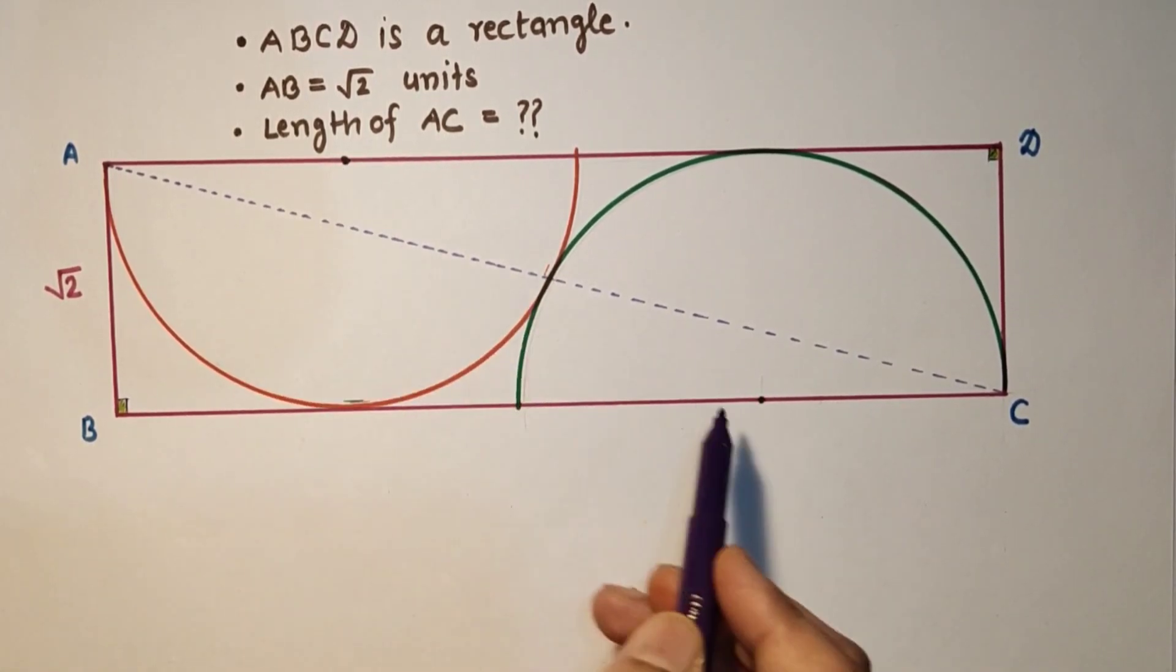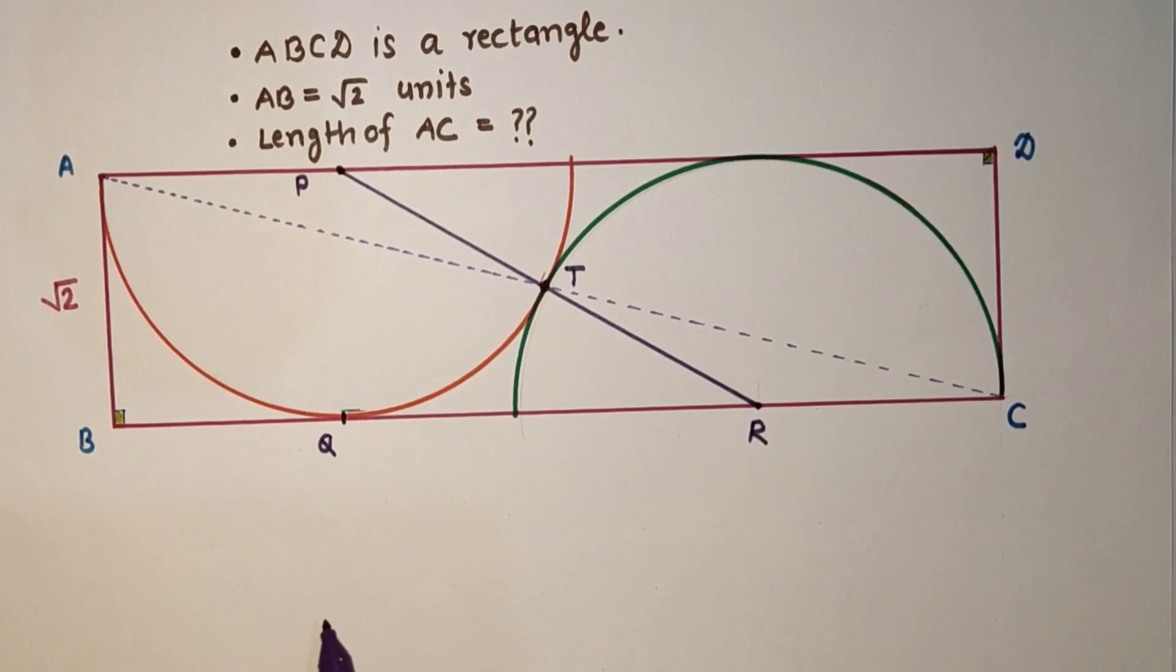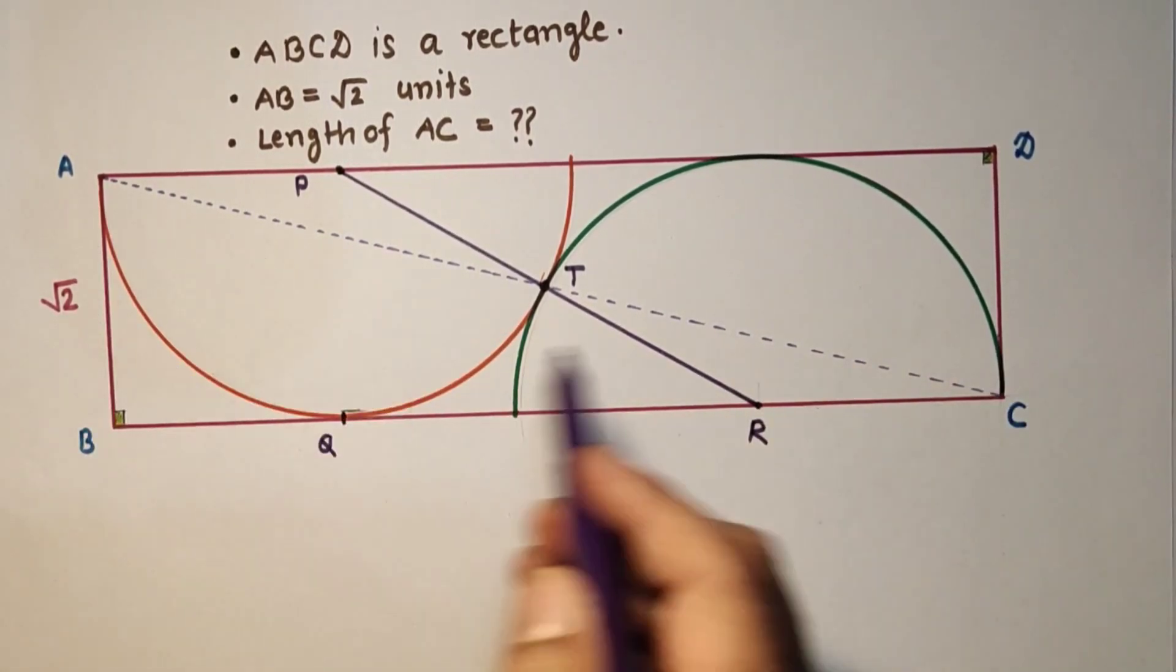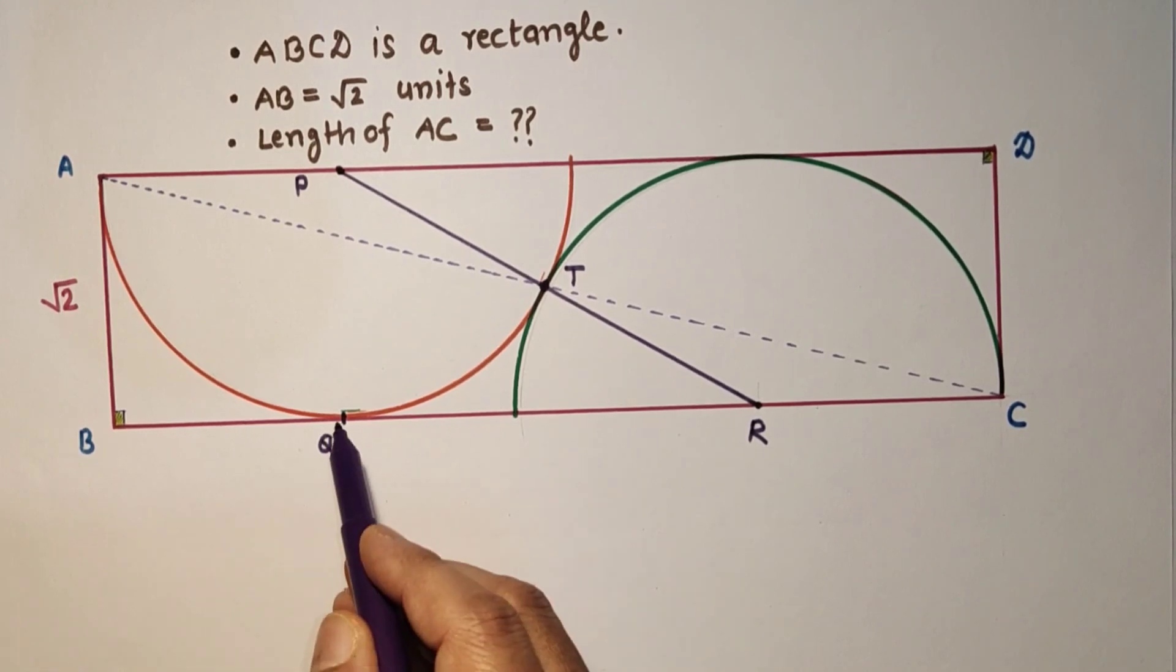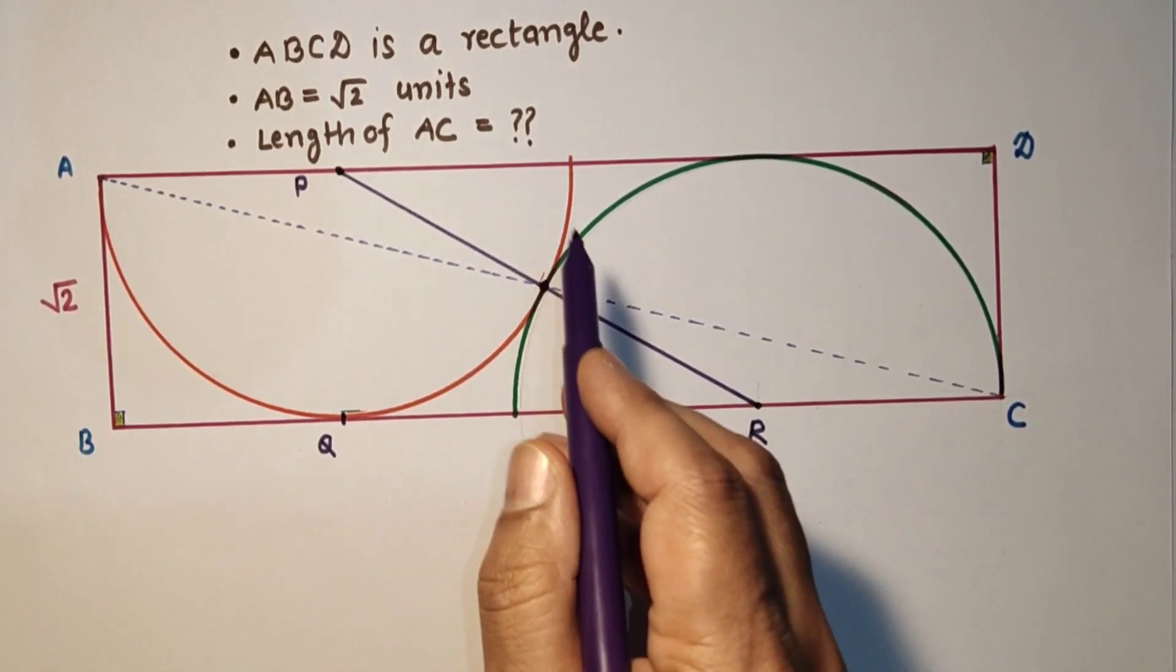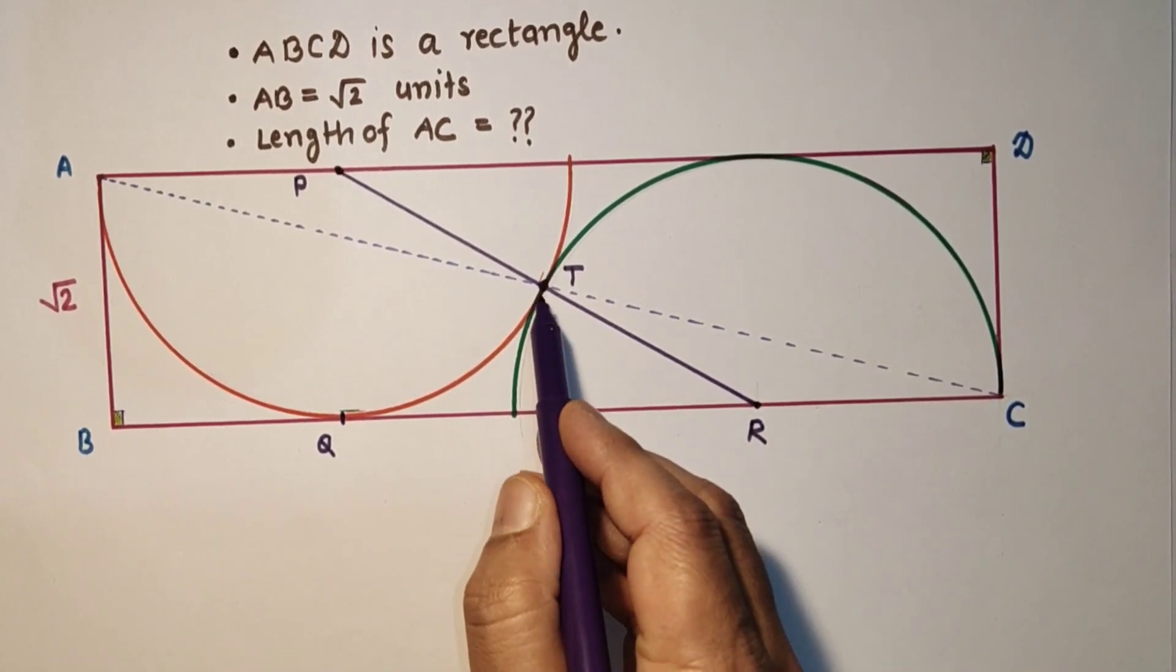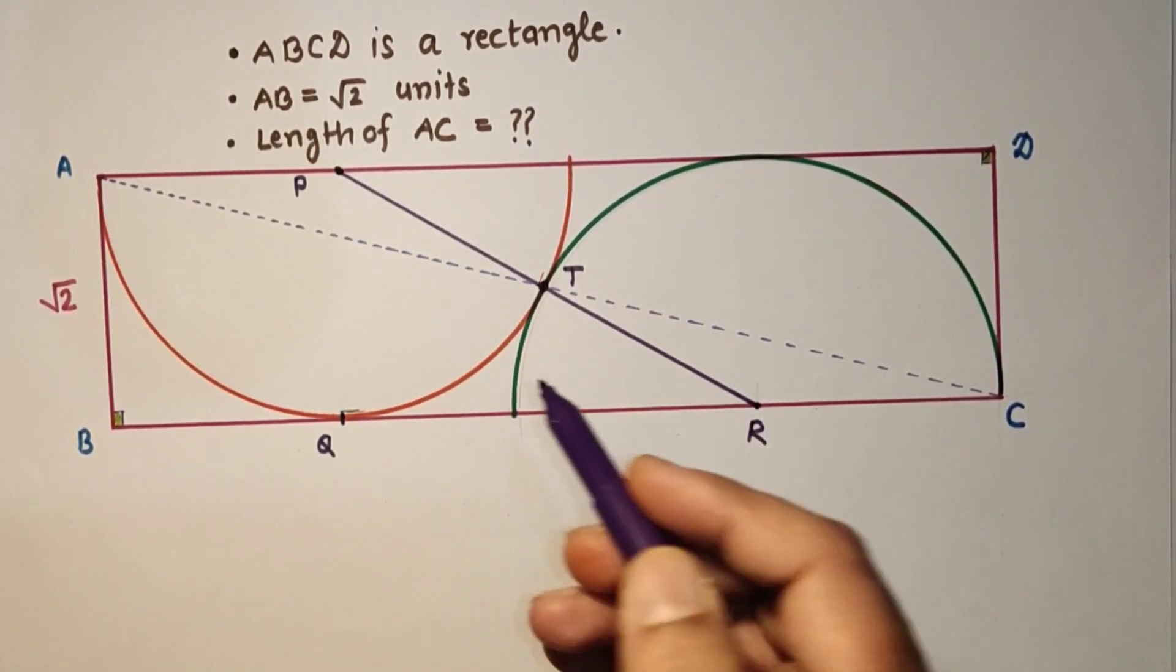So join PR where P and R are the centers of the two semi-circles. Q is the point of contact with this semi-circle and this BC side, and T is the point of contact of these two semi-circles.